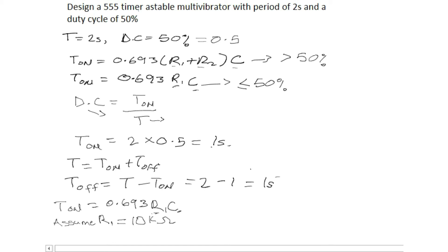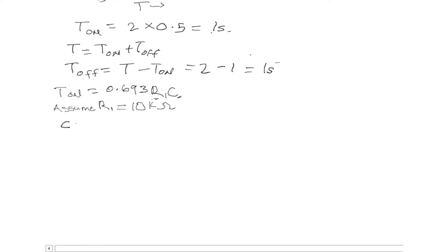Well, from this I can calculate for my capacitor. My capacitor will now be T_on over 0.693 R1. Our T_on is 1 second all over 0.693 times R1. Our R1 is 10 kilo, so we have 10 kilo. Now our answer is, if you calculate it, you get 144.3 microfarad.